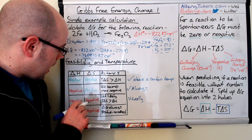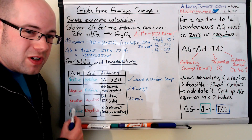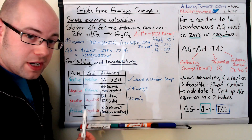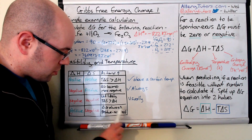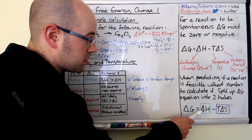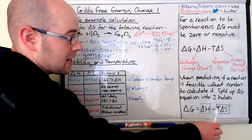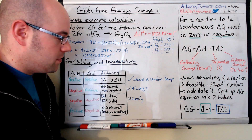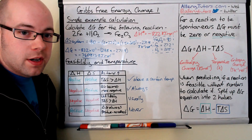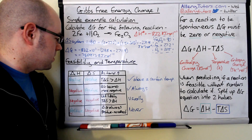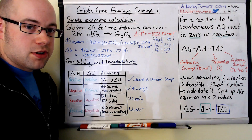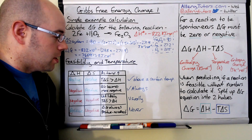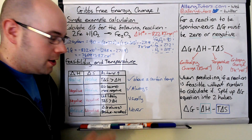The last scenario: if delta H is positive — an endothermic reaction, which is not favourable — and delta S is also negative, which is not favourable either, then delta G is always positive. Subtracting a negative T delta S effectively adds a positive value, so delta G will never be negative. Reactions with this combination will never be feasible. As temperature increases, the reaction becomes less and less likely to happen.